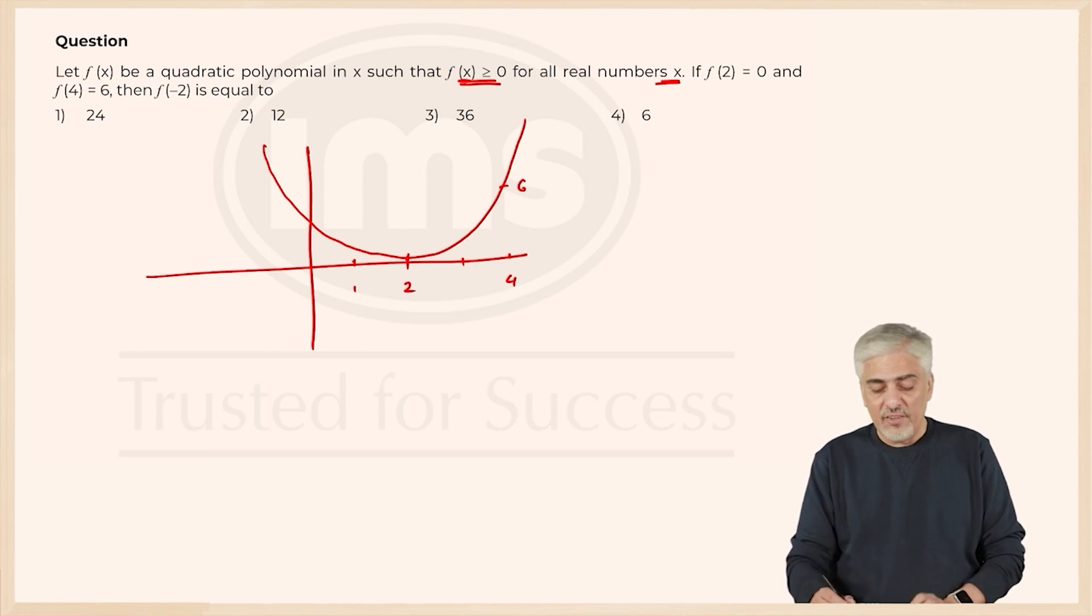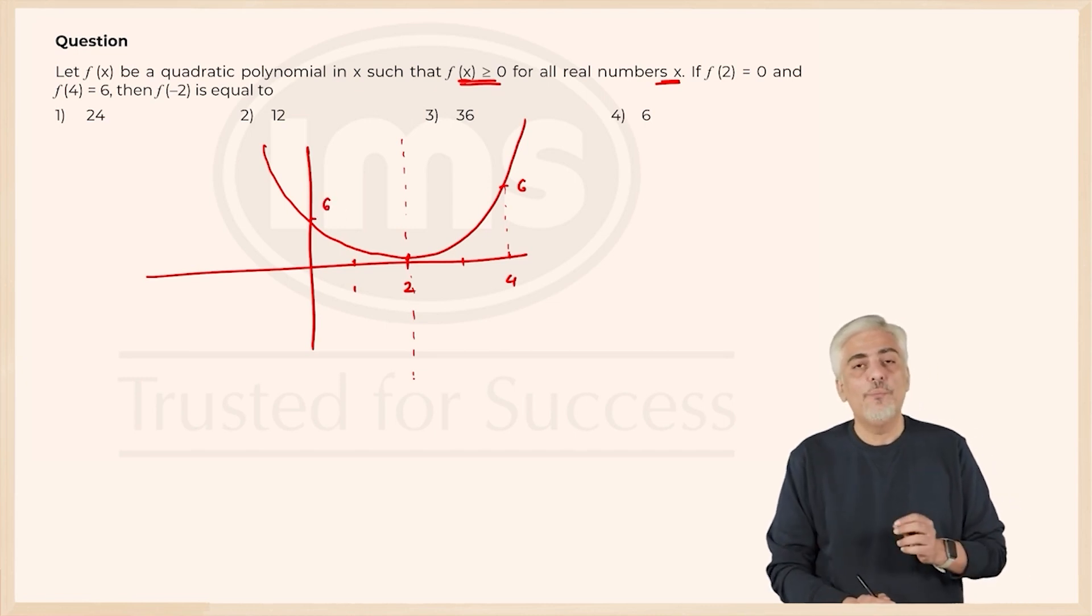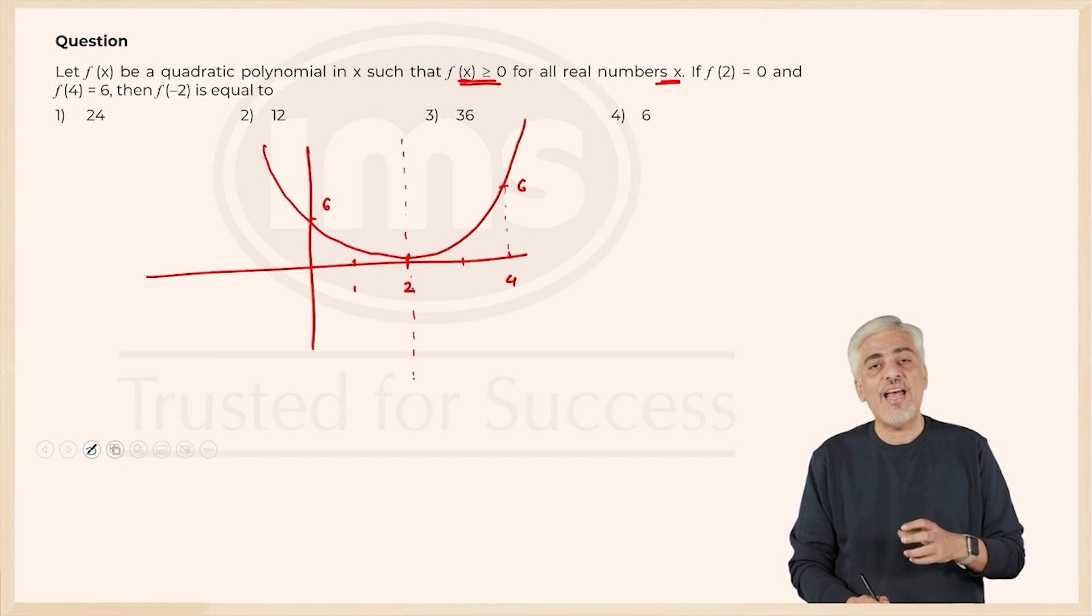We know that the graph will be symmetric at 2. So if f of 4 is 6, then f of 0 will also be 6. f of 0 will also be 6.